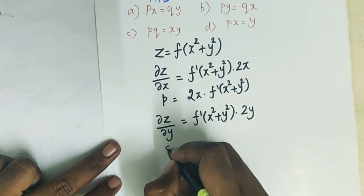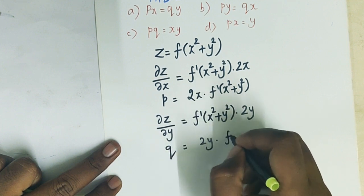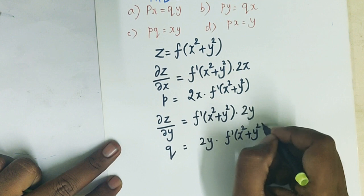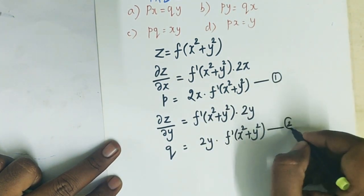So dz by dy, which we call q, we obtain. This equals equation 1, and q equals equation 2.